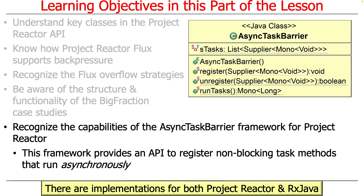What the Async Task Barrier does is provide an API that can be used to register typically non-blocking task methods that will then run asynchronously in the background, and provide a single point to wait for all those asynchronous operations to finish.